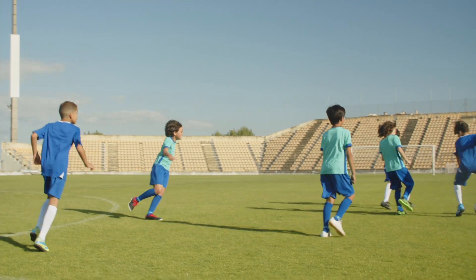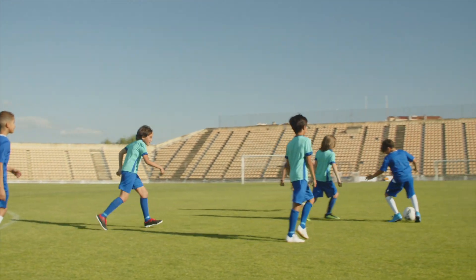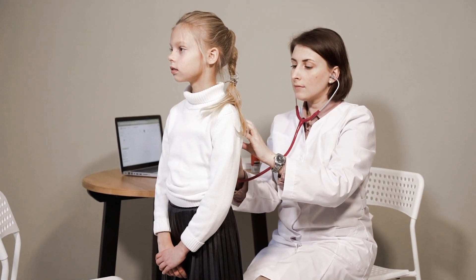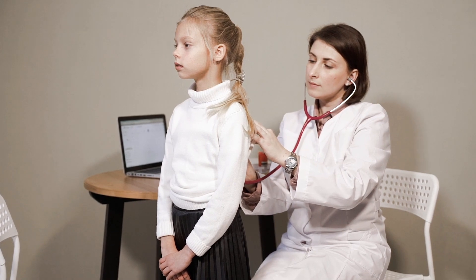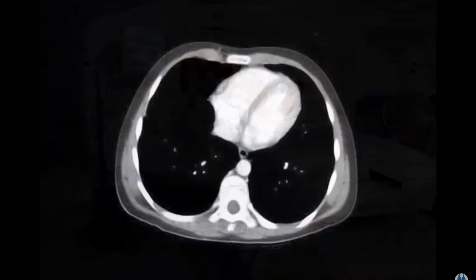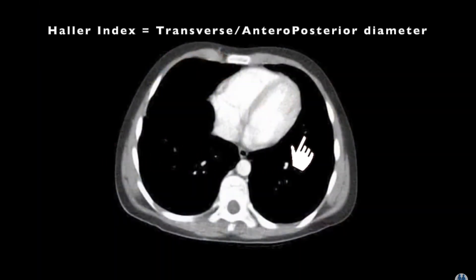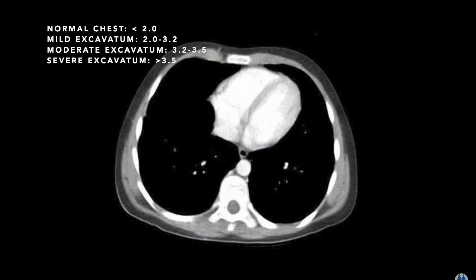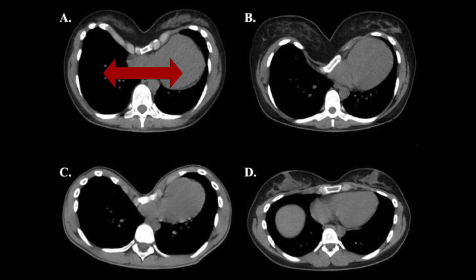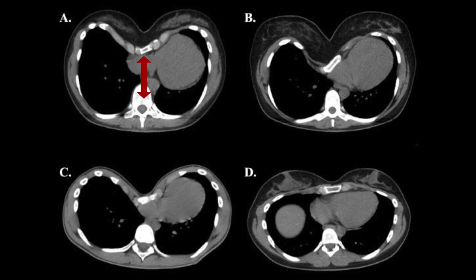Even so, most pectus excavatum patients do not experience such symptoms, and those that do usually have them dealt with as children. To detect and measure the severity of a defect, the Haller index — a ratio of the transverse to the antero-posterior diameter — is used while observing the CT scans of the chest. Pectus excavatum patients have relatively larger transverse diameters compared to non-patients.